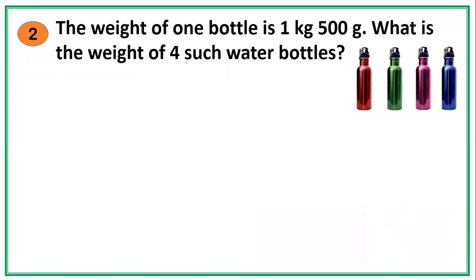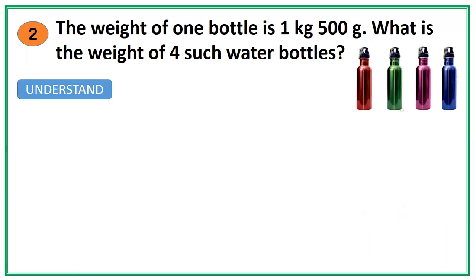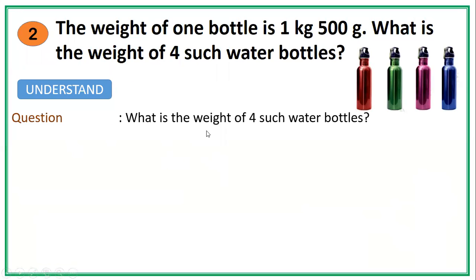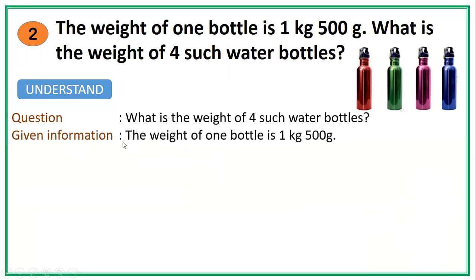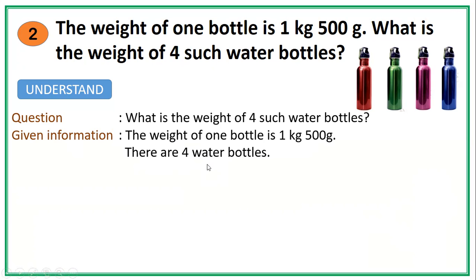Example number 2: the weight of one bottle is 1 kilogram and 500 grams. What is the weight of four such water bottles? The question being asked is: what is the weight of four such water bottles? The information given is that the weight of one bottle is 1 kilogram and 500 grams, and there are four water bottles.